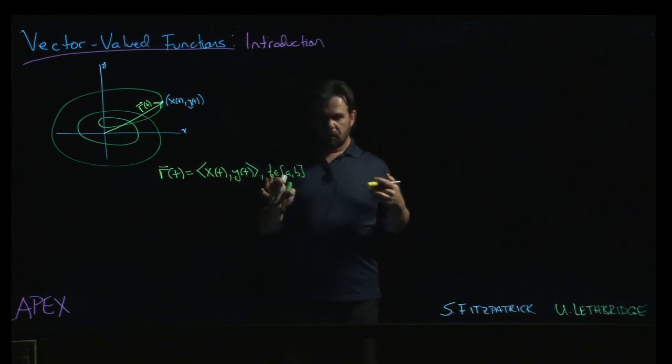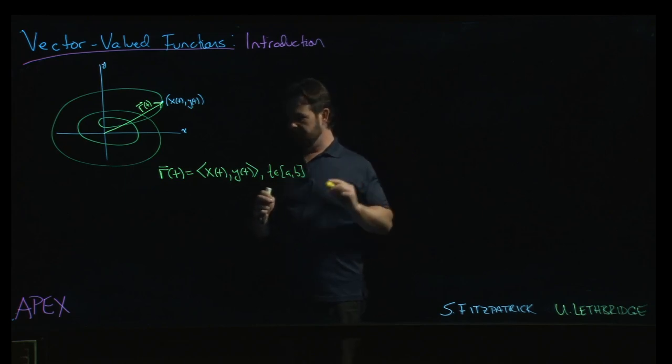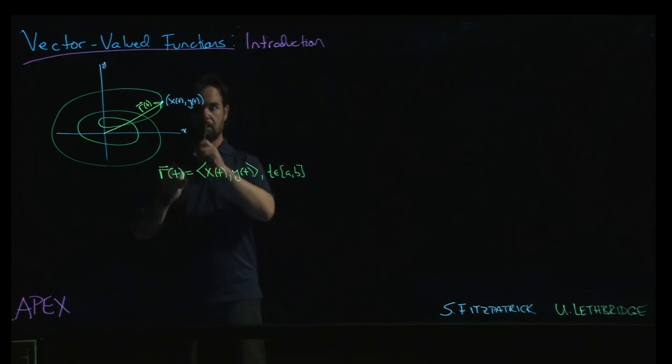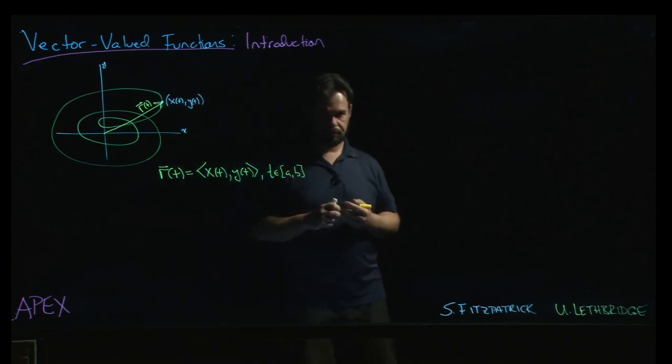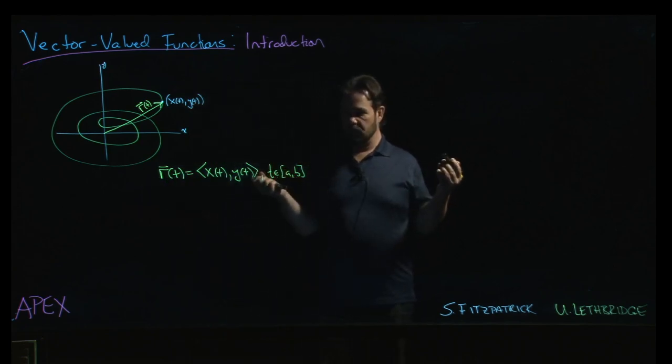Other than sort of a question of perspective, there is really no difference between a parametric curve in the plane, as you've previously studied, and this vector-valued function. They're really two objects, which are just two ways of looking at the same thing.